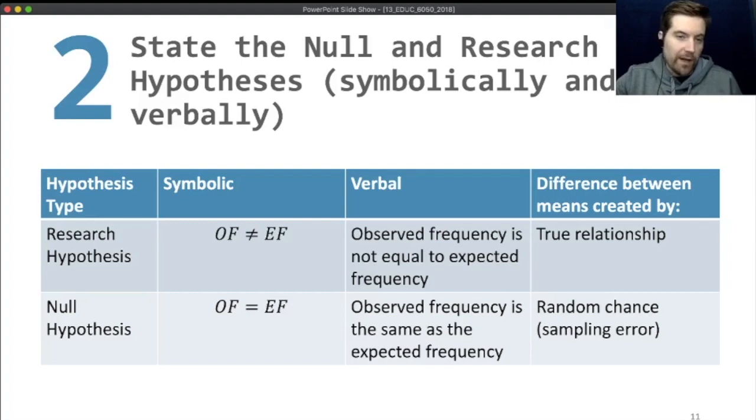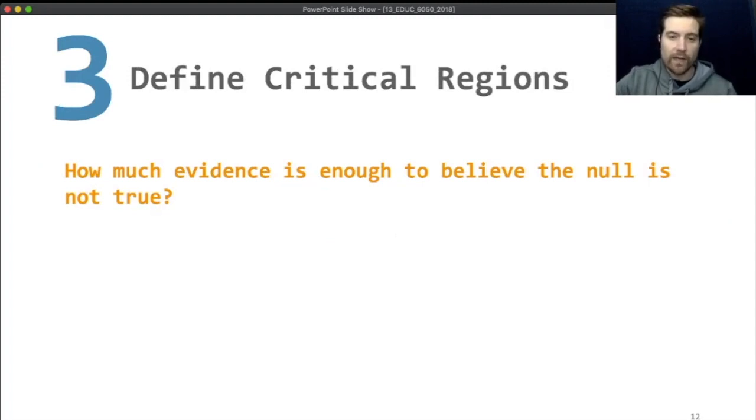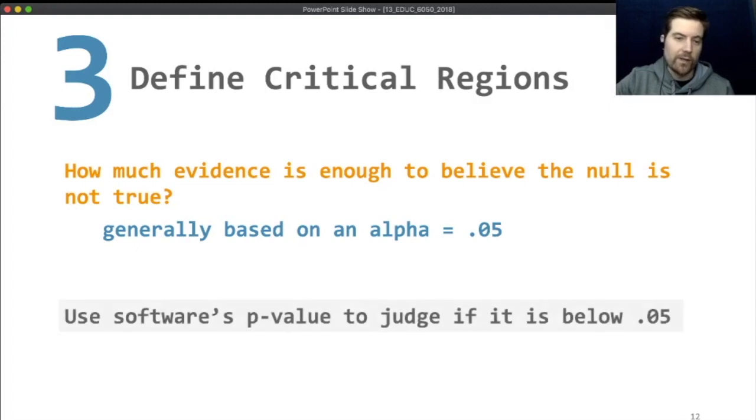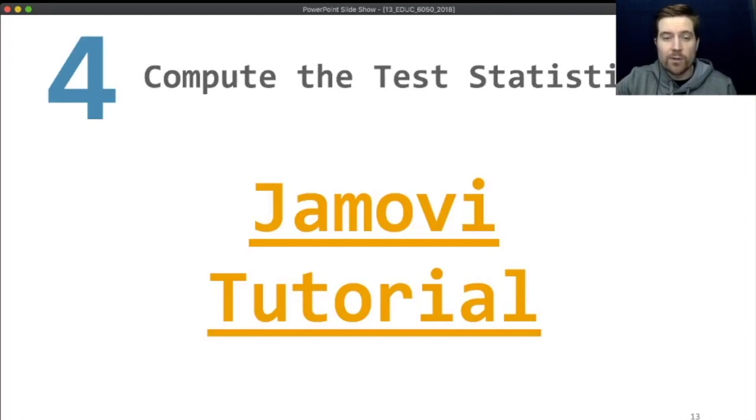For the null and the research hypotheses, the null is that the observed frequency is the same as the expected frequency. This just means that what we expected by chance is roughly what we observed. The research hypothesis is saying that's not the case. The observed frequency is somewhere different than the expected. For the critical regions, we're going to use an alpha of 0.05. We're going to use Jamovi's p-value to judge that.